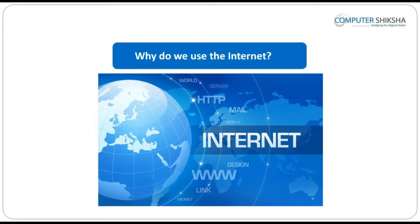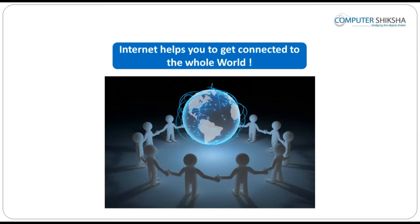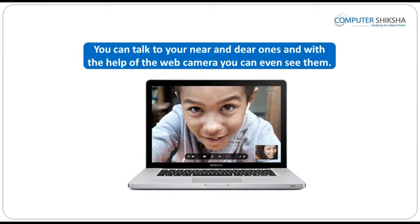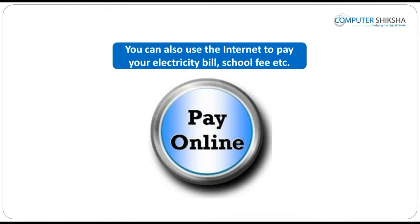Why do we use the internet? Using the internet, you can do many types of work — like getting information on subjects like science, maths, geography, and English. Internet helps you to get connected to the whole world. You can talk to your near and dear ones, and with the help of a web camera, you can even see them. Using the internet, you can also do your shopping and get anything you want from the market delivered to your home.